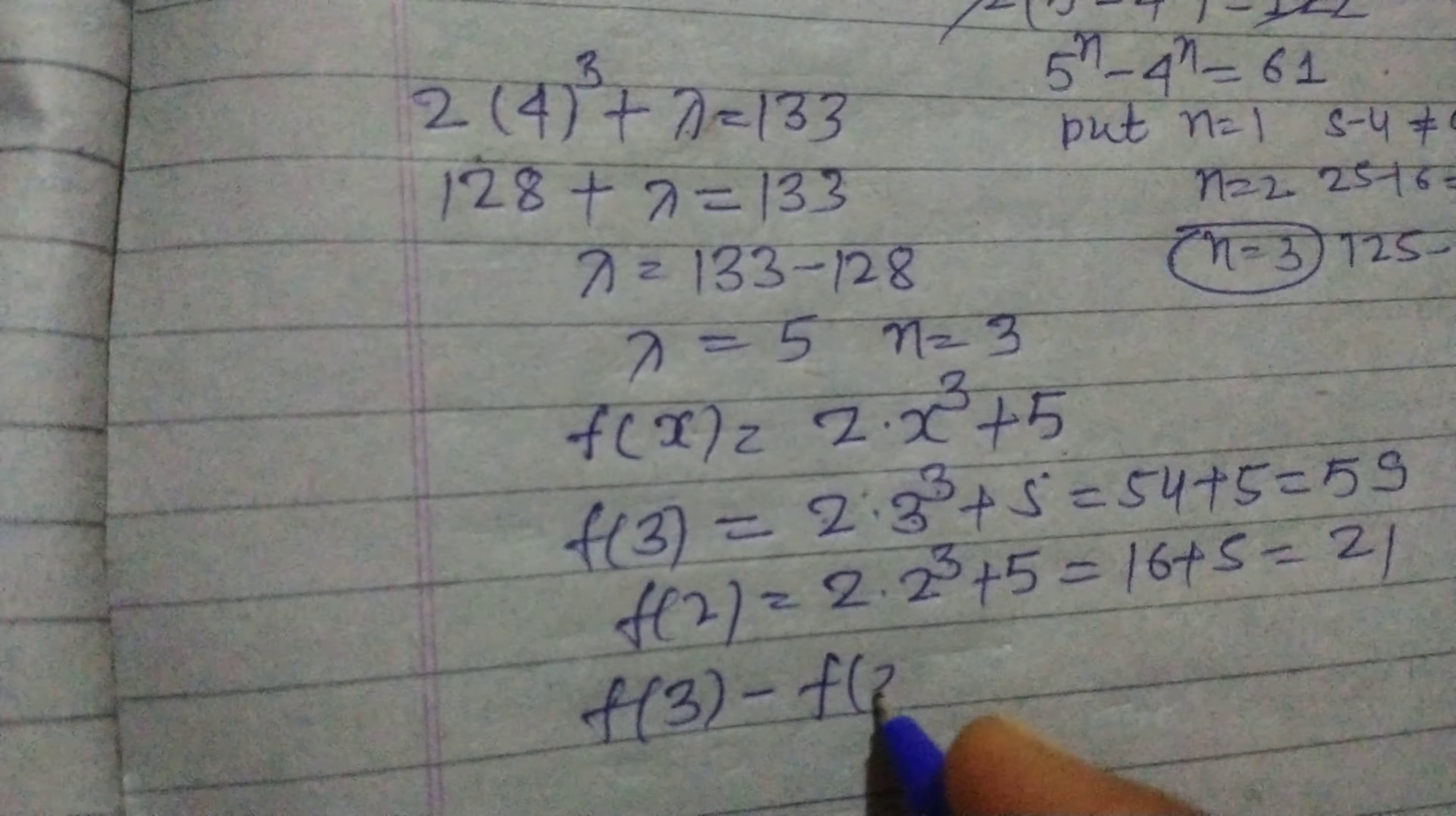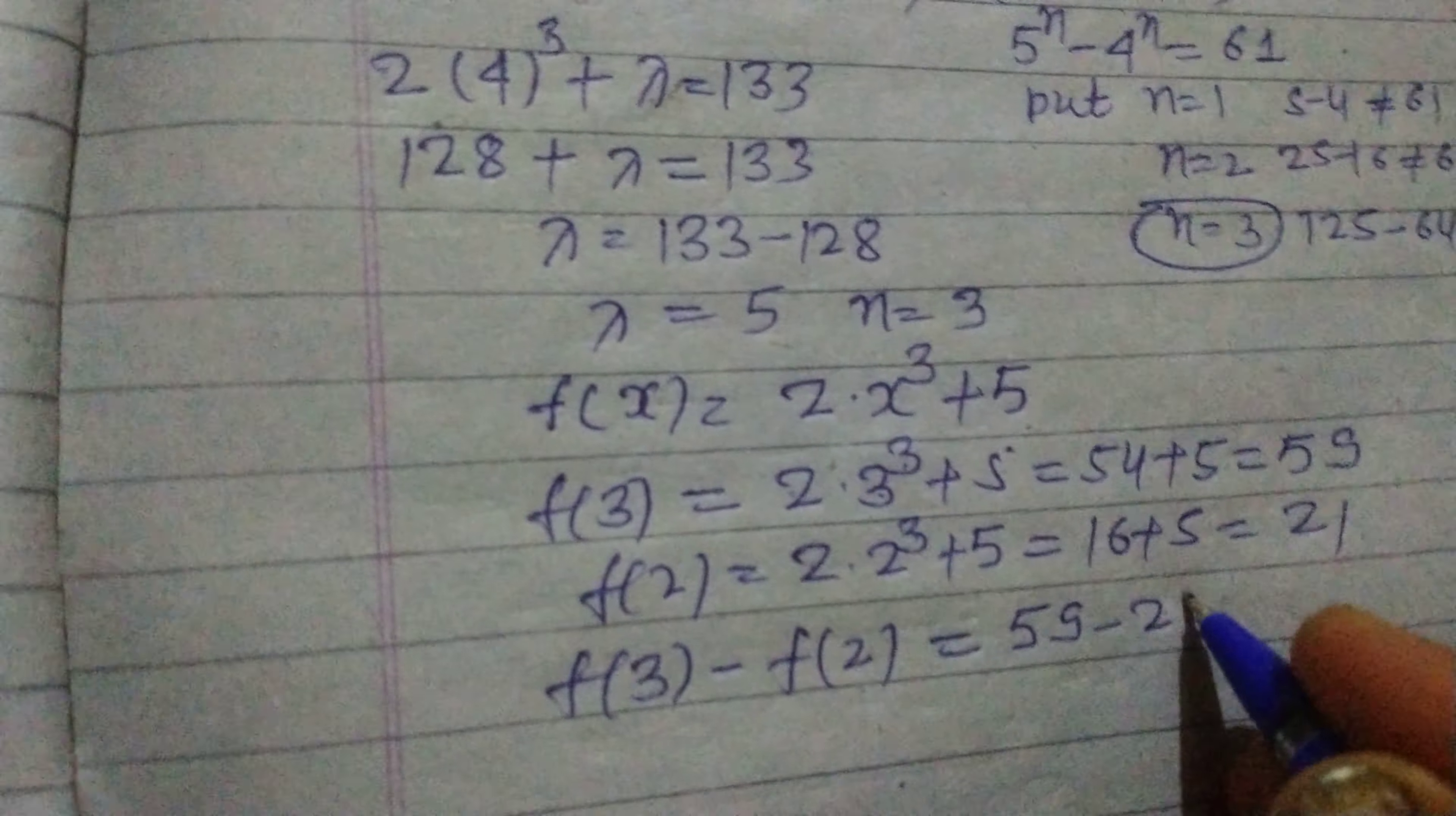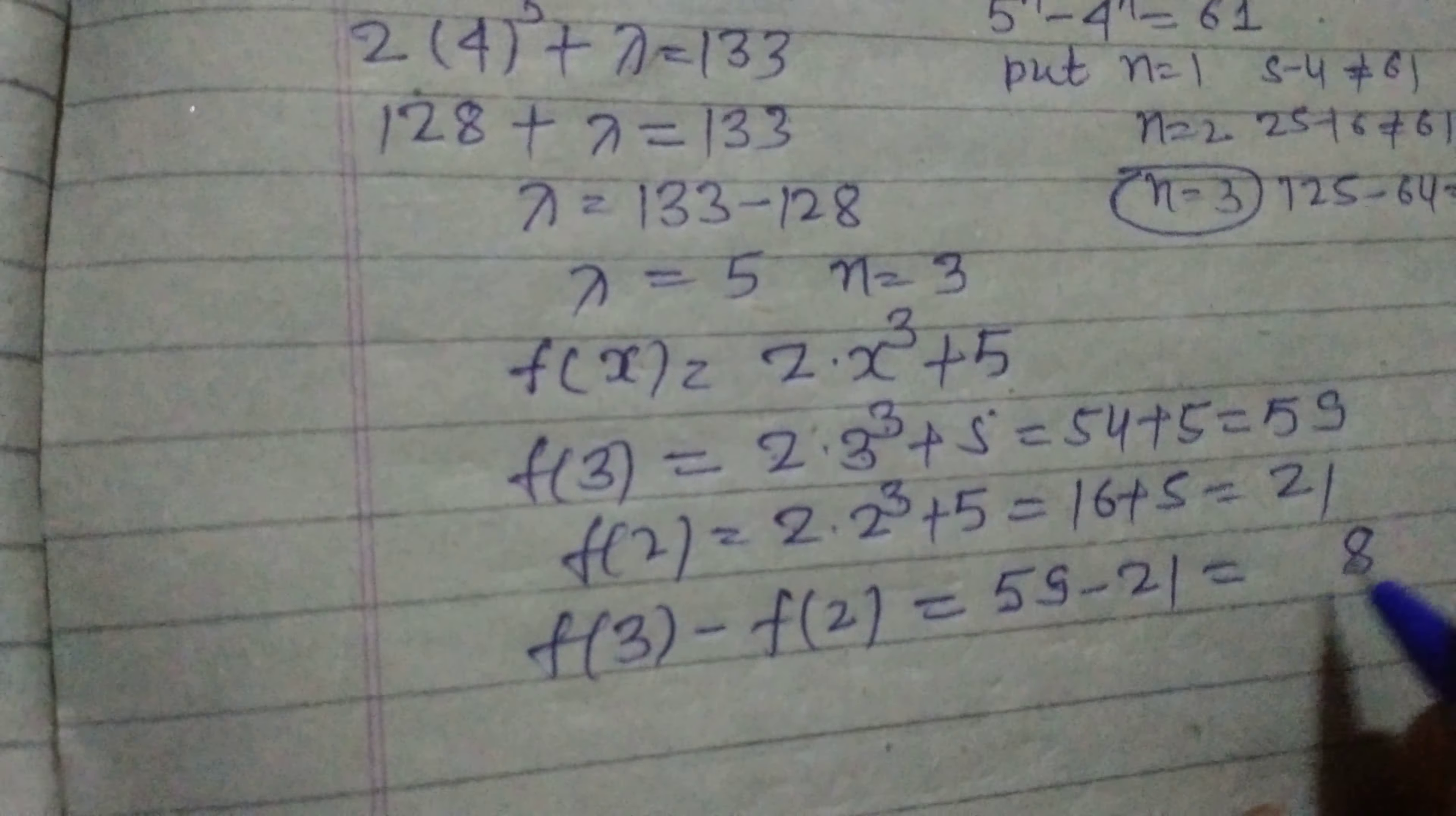Now f(3) - f(2). Here, 59 - 21. So this is 9 minus 1 is 8, 5 minus 2 is 3, equals 38.